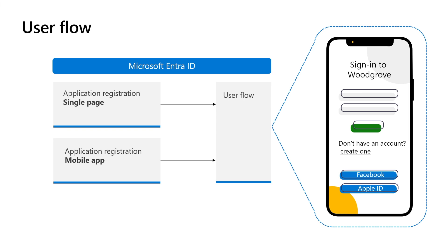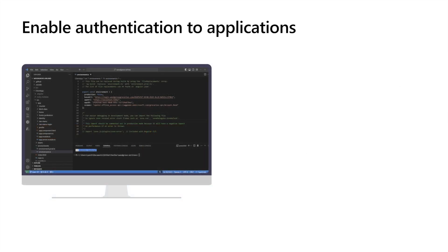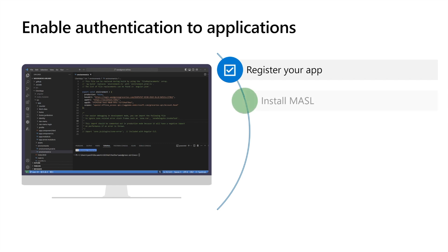Now that we have covered application integration with Microsoft Entra External ID, let's delve into the configuration of the application itself. The Microsoft Authentication Library, or MSAL, empowers developers to authenticate users within applications and obtain security tokens for accessing protected web APIs. To enable authentication for your application, you need to register the application in Microsoft Entra External ID as we discussed, install the MSAL library in your project, then configure MSAL with the tenant ID, application ID, and application secret or certificate. For applications that invoke web APIs, you configure the web API URL and the permissions or scopes required to call the web API.